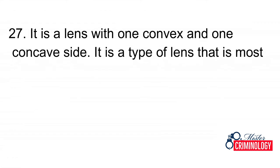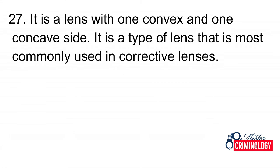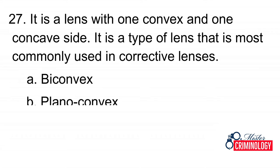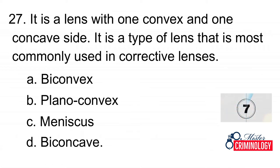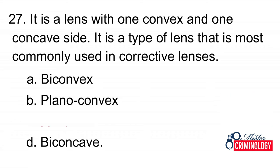Question 27: It is a lens with one convex and one concave side. It is a type of lens most commonly used in corrective lenses. A. Biconvex, B. Plano-convex, C. Meniscus, D. Biconcave. Answer: C. Meniscus.